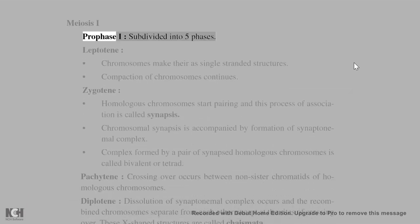Meiosis I Prophase I is subdivided into five phases. Leptotene: Chromosomes appear as single-stranded structures; compaction of chromosomes continues. Zygotene: Homologous chromosomes start pairing, and this process of association is called synapsis.